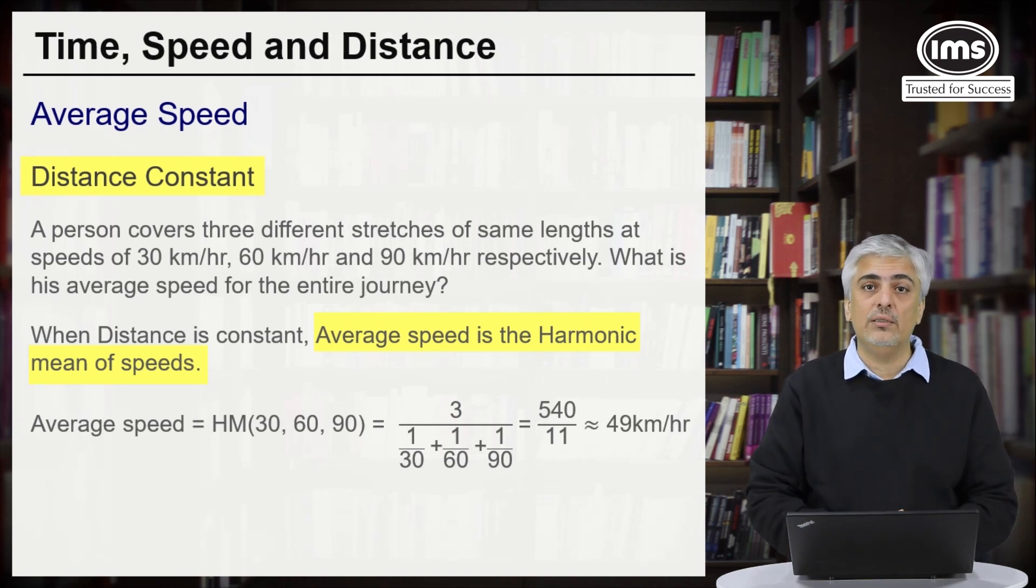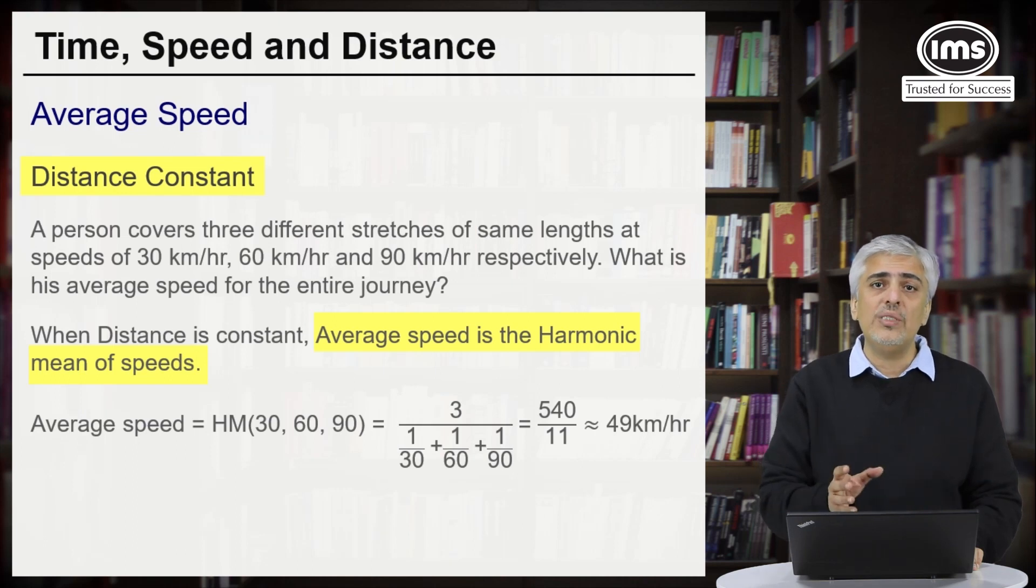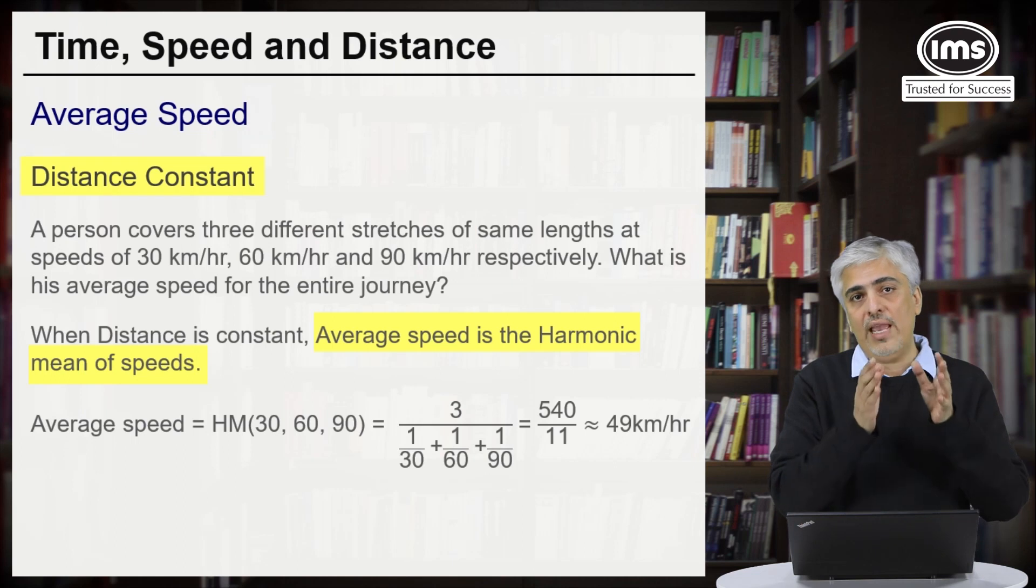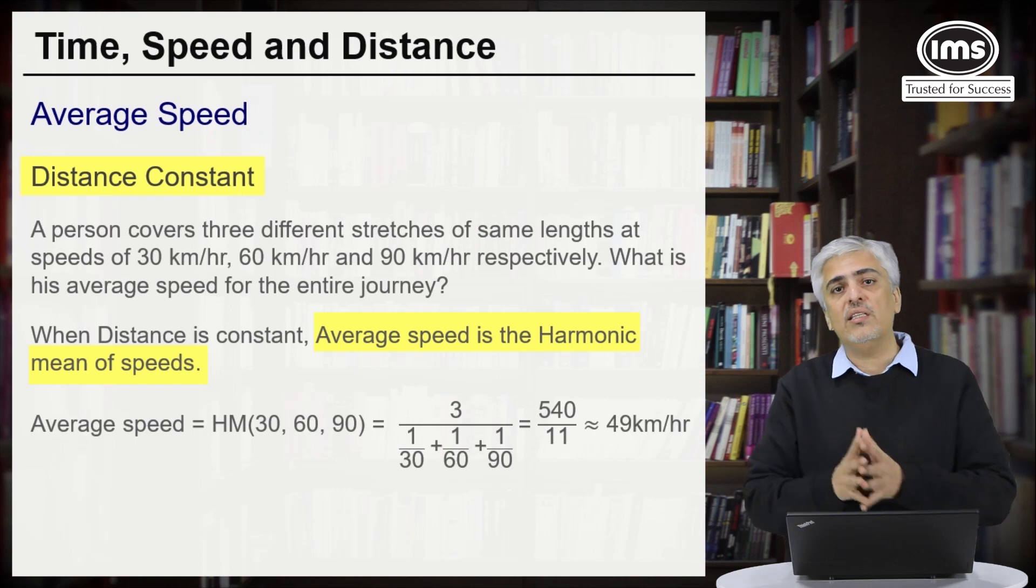This is definitely one method to do that. But there could have been one more method. I had already told you in the starting that whenever you want to do average speed, you can do total distance upon total time taken. How would you use that method for this question? What you could do over here was take the LCM of 30, 60, 90. The LCM of 30, 60, 90 could be 180. So 180 distance is every time. So every time we cover the distance of 180. So 180 in the first case, 180 in the second and 180 in the third.